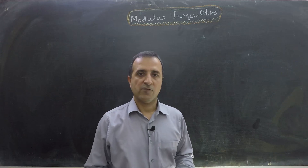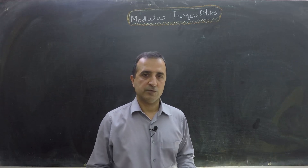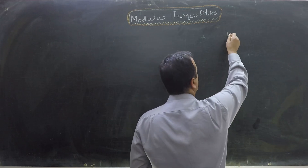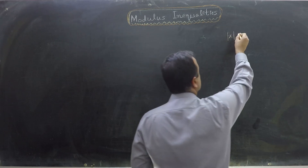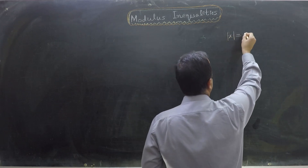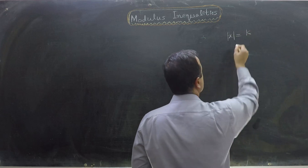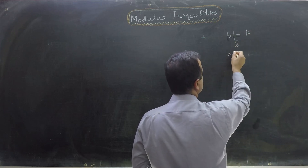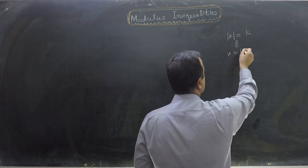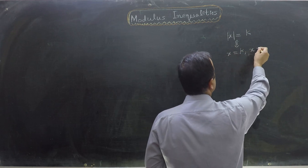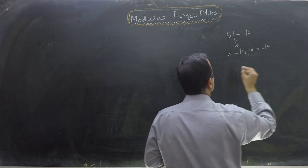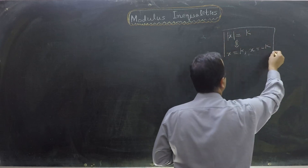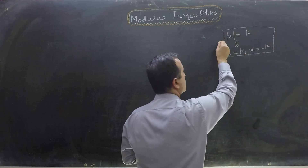In the previous video we mentioned some rules. One of our rules was that when mod of x equals k, then it is equivalent to x equals k and x equals minus k. We call this our rule number 2.